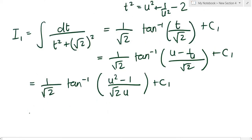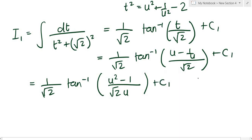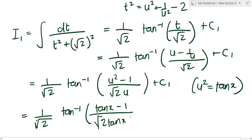Now remembering that u² = tan(x), we can get everything back in the x world: I₁ = (1/√2) · arctan((tan(x) − 1) / √(2 tan(x))) + c₁. That's our I₁.